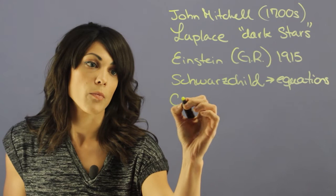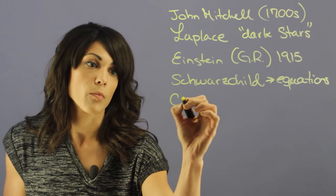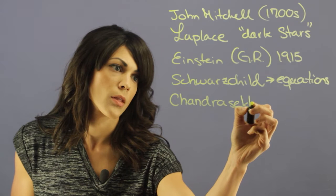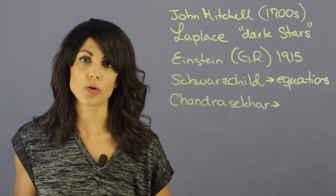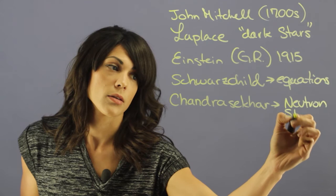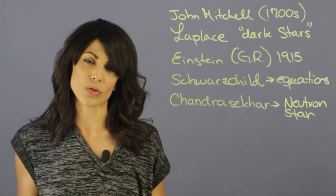And then we had a really big name come in and that's Chandrasekhar. And he set up the limit for which stars can become a neutron star. And this was actually a really groundbreaking discovery just because he was able to narrow down, okay, these are the stars that can become a black hole.